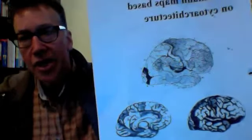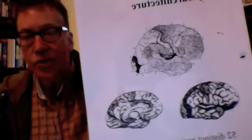Brodmann, in 1909, was a German neuroanatomist who examined the neocortex in great detail, looking for differences in cell architecture — the width and thickness of certain layers, for example. He identified 52 distinct cytoarchitecturally distinct regions that are now known as Brodmann areas.